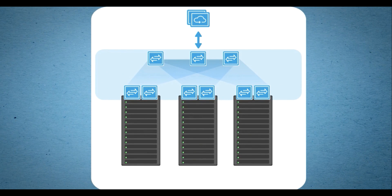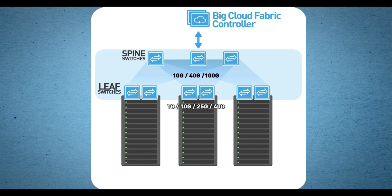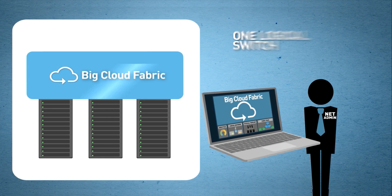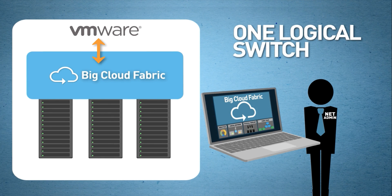Big Cloud Fabric is powered by an STN controller to build a leaf-spine fabric using open networking switches. Unlike box-by-box networks, Big Cloud Fabric provides a single pane of glass and integrates with various VMware SDDC products and operates the entire fabric as a single logical switch.